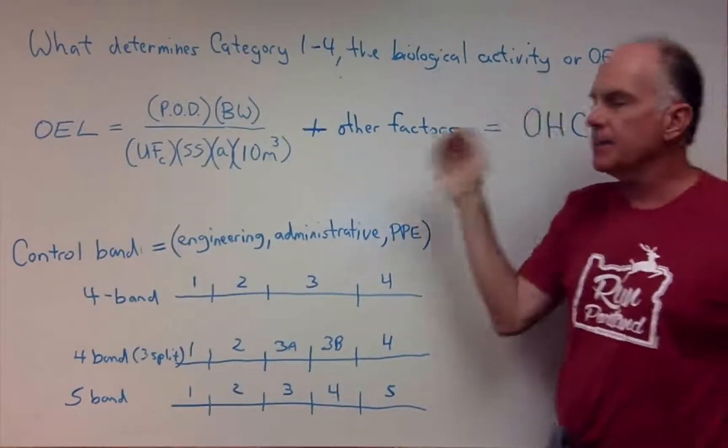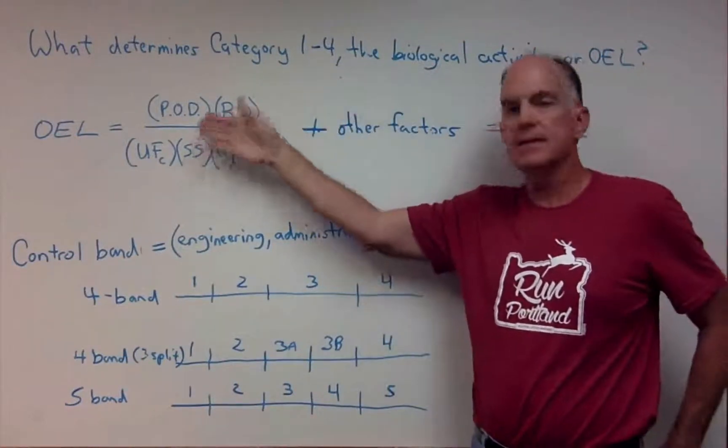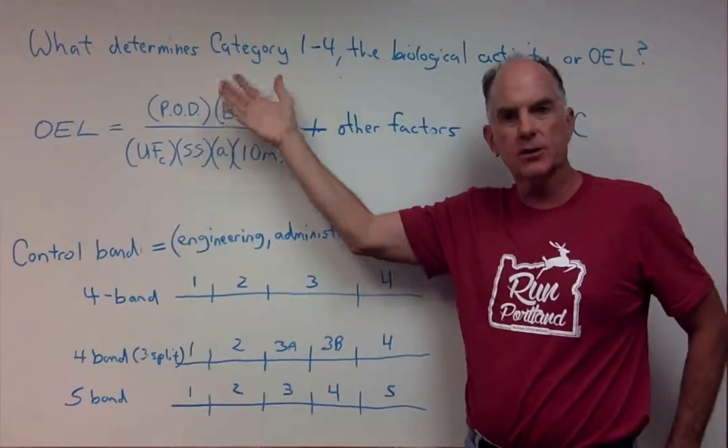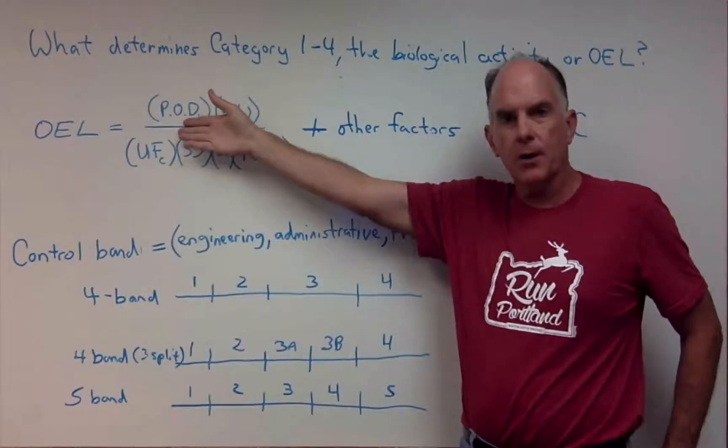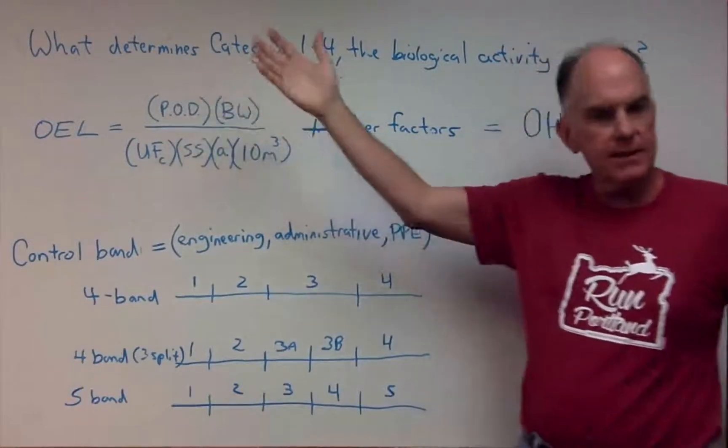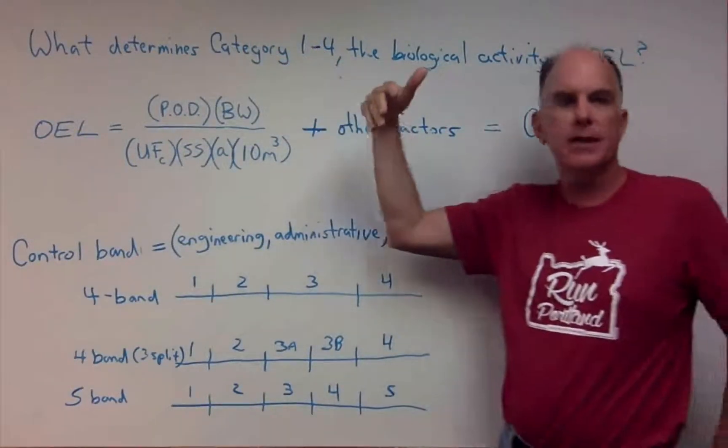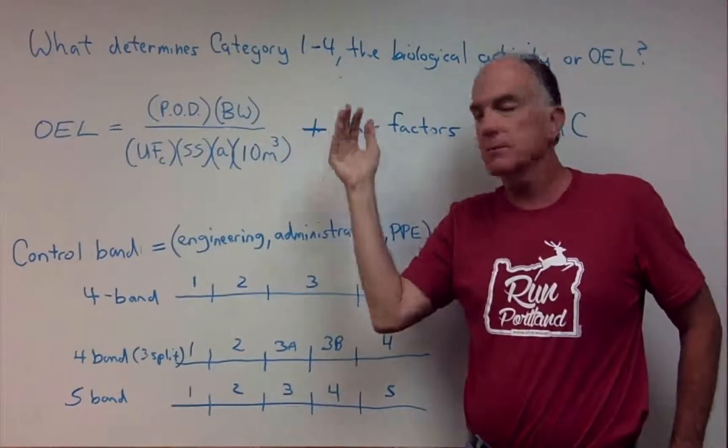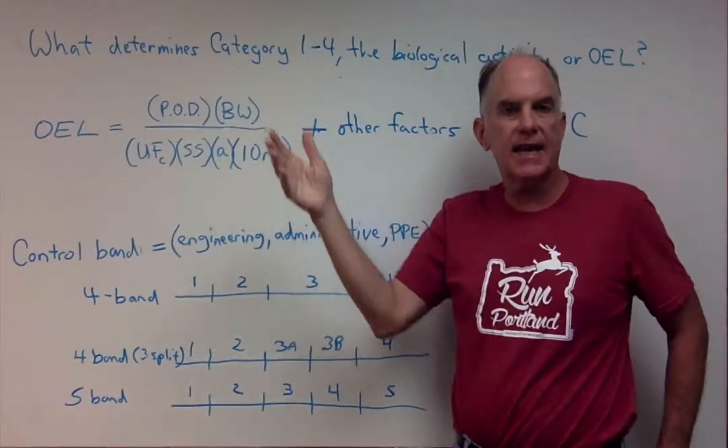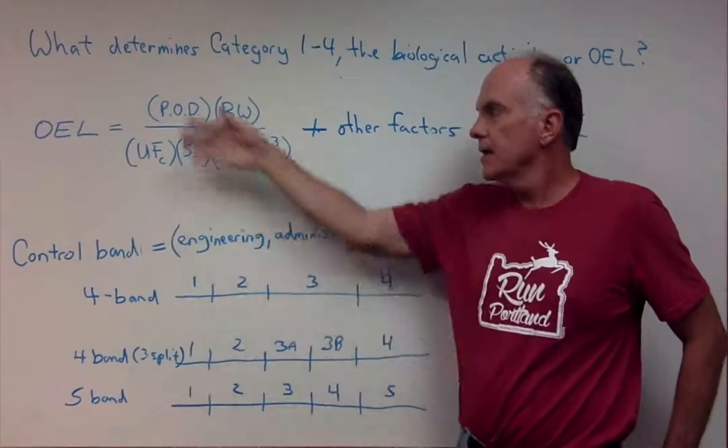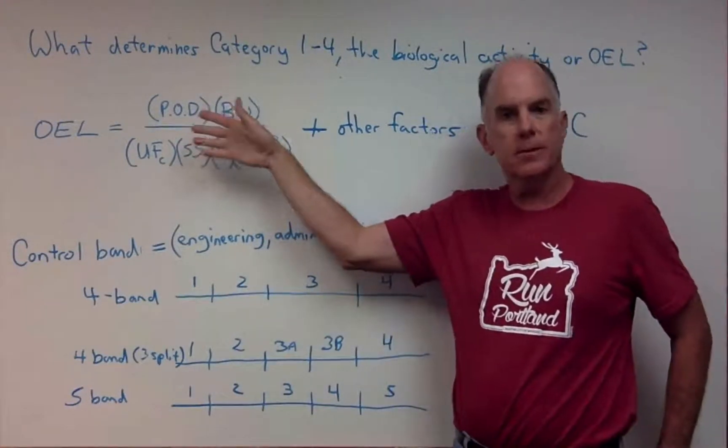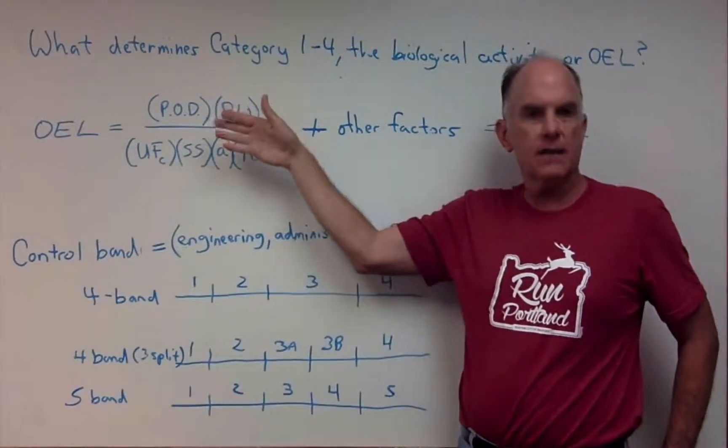Well, to get to that, the occupational hazard category is primarily determined by the OEL, which is determined by the point of departure, which could be the lowest daily therapeutic dose. It could be a single acute study. It really depends on what stage of drug development you are. The OEL should be determined by a professional toxicologist.